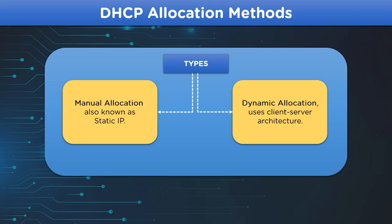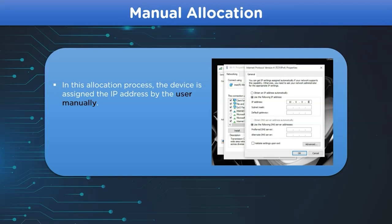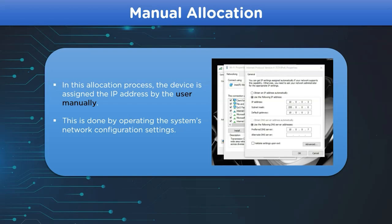In manual allocation, the user manually assigns the IP address to the system for accessing the internet. This is done by accessing the network configuration settings of the device and also requires other related configuration such as subnet mask, preferred DNS server, and default gateway.